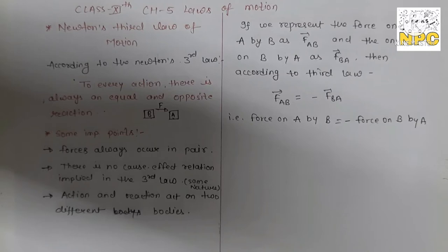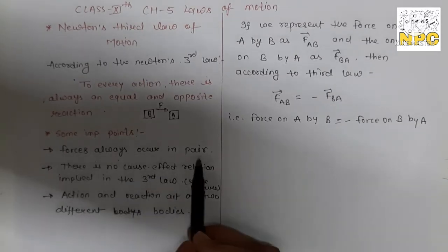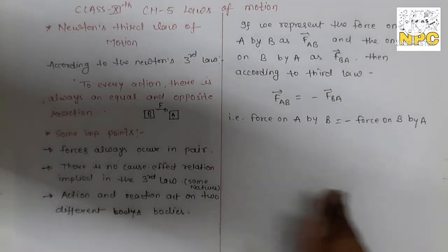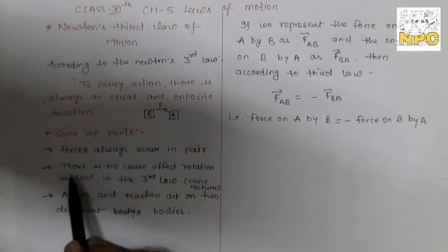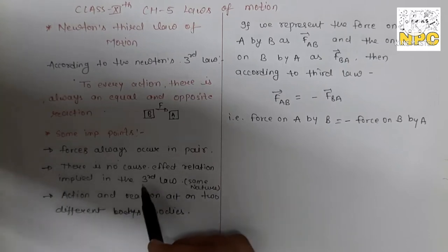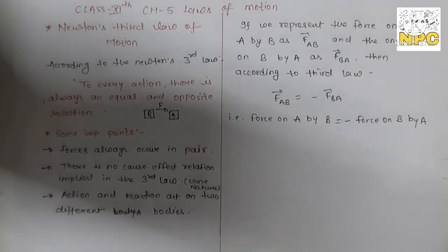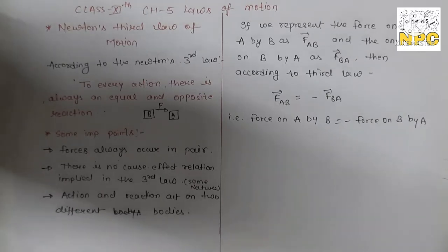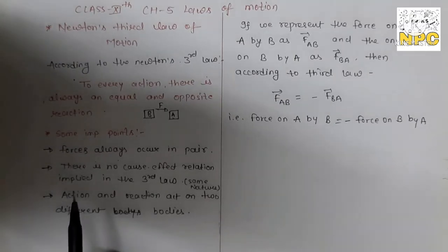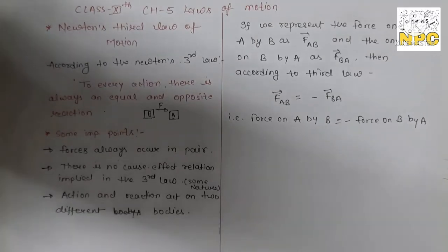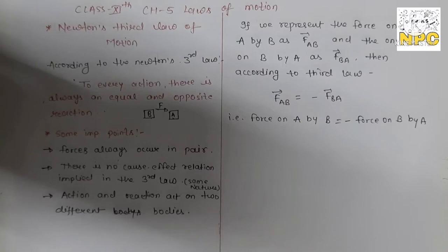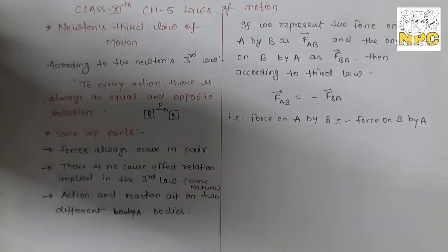There are some important points in Newton's third law. First, forces always occur in pairs. Second, there is no cause-effect relation implied in the third law — action and reaction forces are of the same nature; for example, gravitational force pairs with gravitational force, not electromagnetic force. Third, action and reaction act on different bodies.